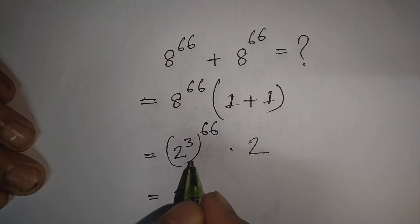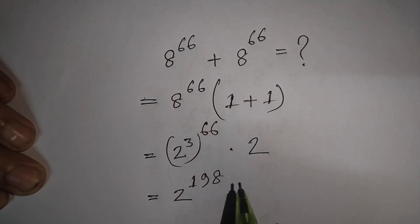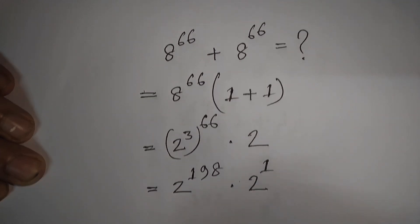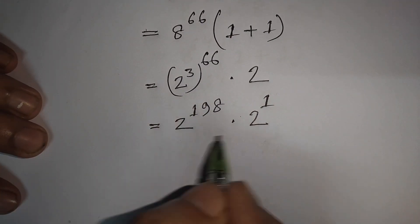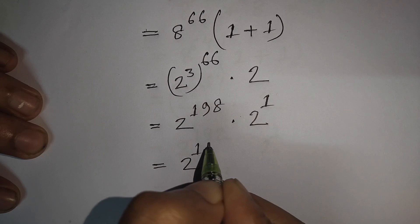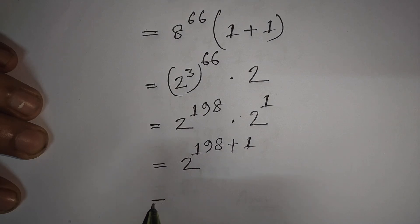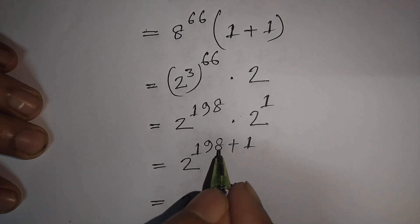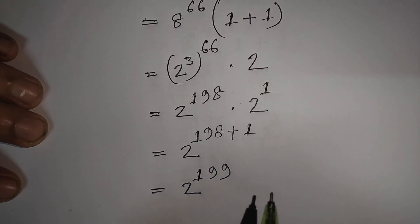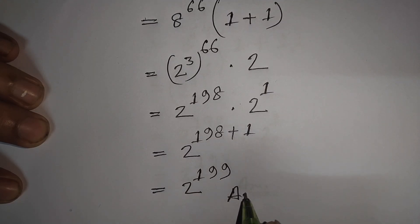Rewriting 8 as 2 cubed, we get 2 to the power 198 times 2 to the power 1, which equals 2 to the power 199. So 2 to the power 199 is the correct answer.